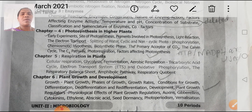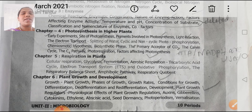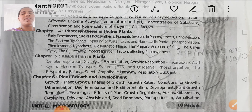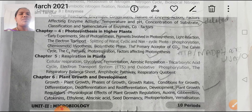Next, Chapter 5: Respiration in Plants. Topics included are glycolysis, fermentation, aerobic respiration, the respiratory balance sheet, amphibolic pathway, and respiration questions. It's clear.